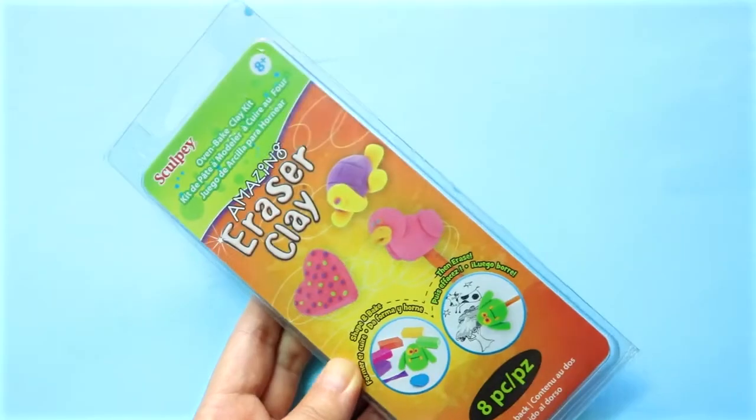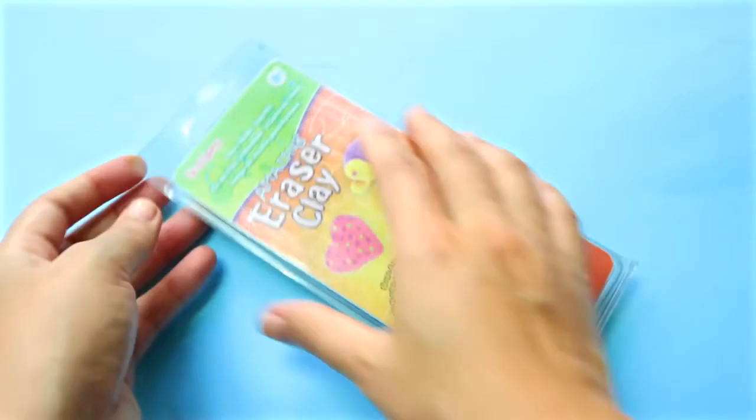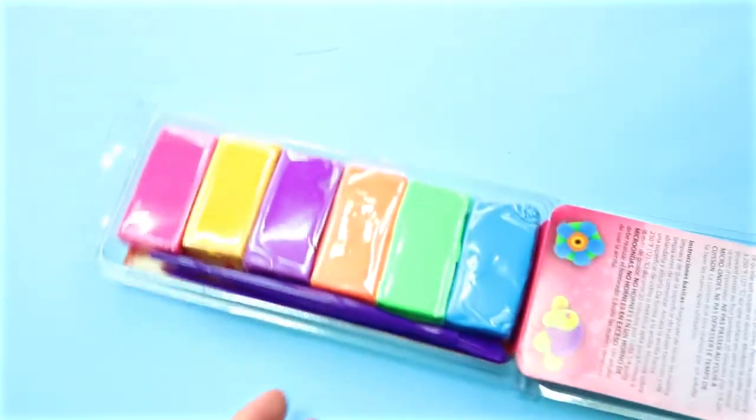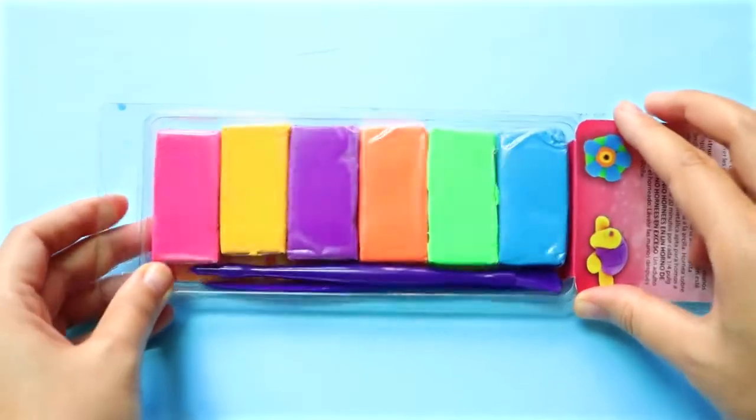Let's move on to the eraser part. I'll be using this eraser kit which I got at Michael's, which I also saw on Amazon so you can easily order from there. It comes with 6 colors and tools.